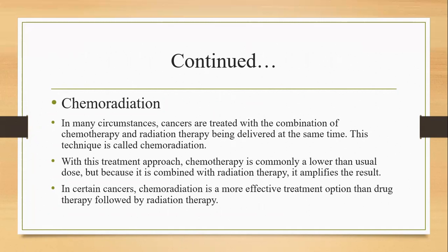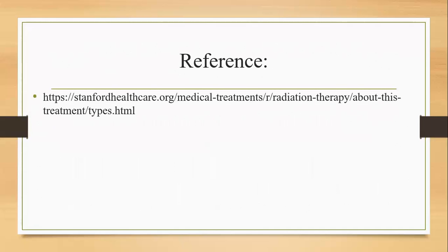The second technique is chemoradiation. In many circumstances, cancers are treated with a combination of chemotherapy and radiation therapy delivered at the same time. With this treatment approach, chemotherapy is commonly given at a lower than usual dose, but because it is combined with radiation therapy, it improves results in certain cancers. Chemoradiation is a more effective treatment option than drug therapy followed by radiation therapy.